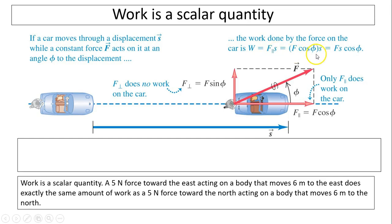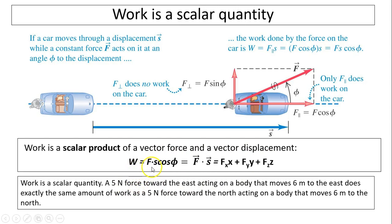F parallel is F cosine phi times displacement. This looks familiar because that is a scalar product. Work is a scalar product of vector force and vector displacement: W equals F dot s. That also equals F_x times x plus F_y times y plus F_z times z. This is the equation we learned in chapter one.